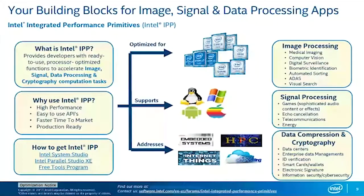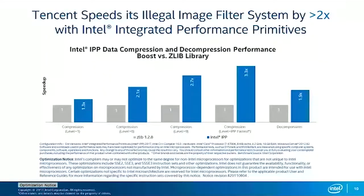Here is an example benchmark from a customer who was using the regular Zlib library. When we switched to the IPP-optimized Zlib compression, in some cases we get as much as three times performance improvement. In other cases it's a little less, but generally it's faster than the open-source Zlib.